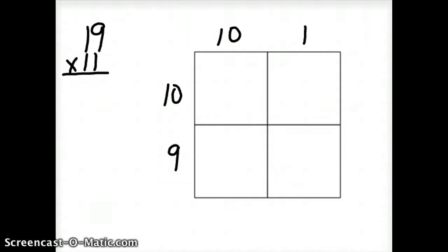Now, the key difference between the box strategy and the open array is that the size of the boxes no longer matters. It begins to transition to a more abstract representation, where the box for 10 times 10 is the exact same size as the box for 10 times 1.